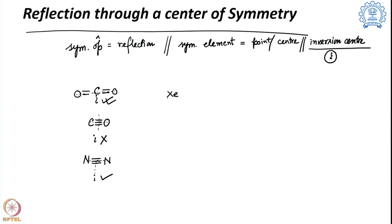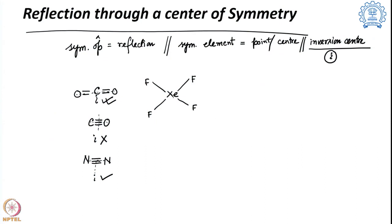Consider xenon tetrafluoride (XeF4) from the top view. The center of the molecule is xenon. The inversion center must be at the center of the molecule, which does not always require an atom to be present there, but here xenon is present. If there is a center of symmetry, reflecting through it should map each fluorine to another fluorine — and that is exactly what happens, so XeF4 has a center of symmetry.